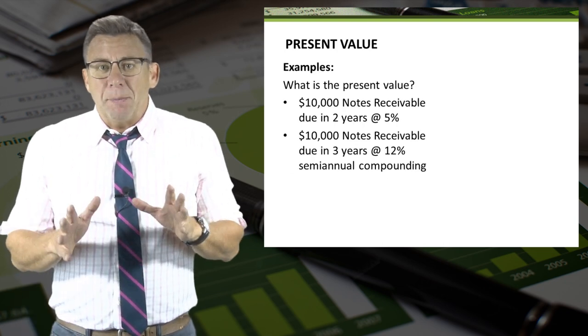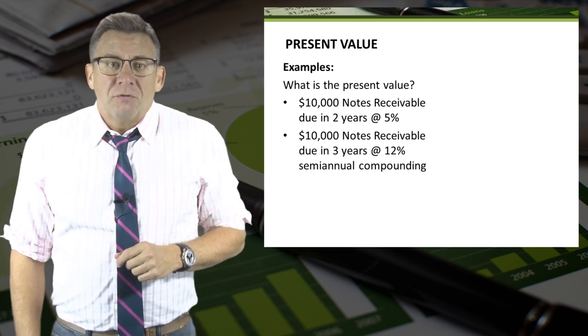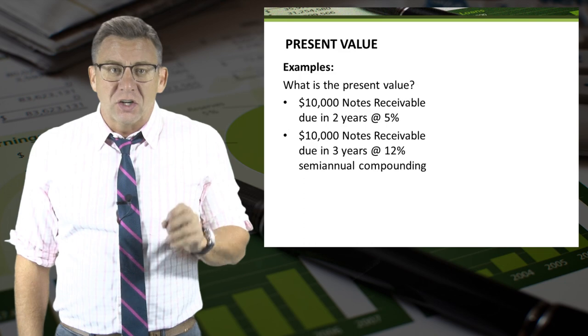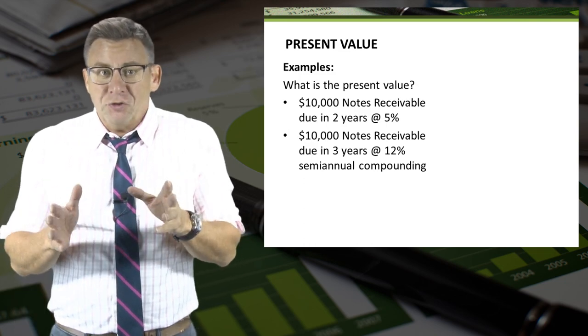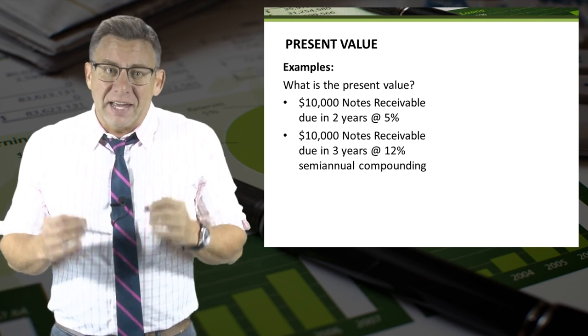Let's look at a couple different scenarios, and I'll show you how to solve them using the tables. For example, a $10,000 notes receivable due in two years at 5%. We know the future value is $10,000. Let's see what that is worth in today's dollars.